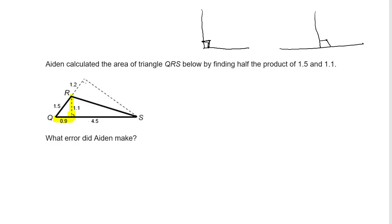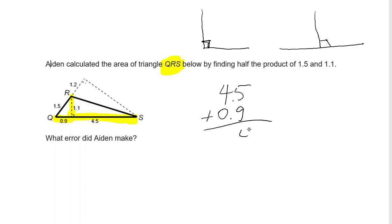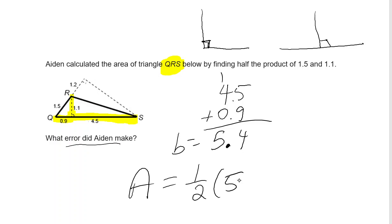If we just use this side, we wouldn't be calculating the area of the entire triangle. We want to calculate the area of the entire triangle QRS, so we have to use the entire length of the base. That means we need to add 4.5 plus 0.9 to get the entire base length of 5.4. So Aiden did not use the correct base length — the correct base length should be 5.4 with a height of 1.1, because those are the two segments that form a right angle.